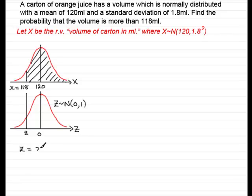Z equals the observed value, minus the mean mu, all over the standard deviation sigma. So if we put our values in, the observed value is 118, minus the mean mu, which is 120, all divided by the standard deviation sigma, which is 1.8. So just put the 1.8 in there.